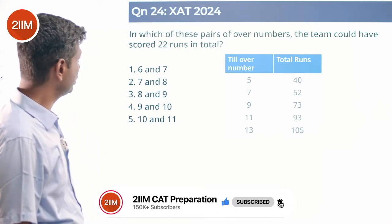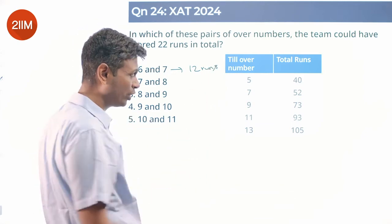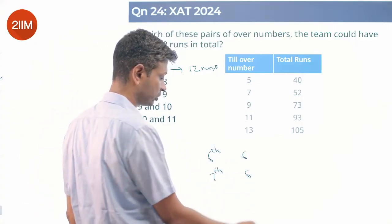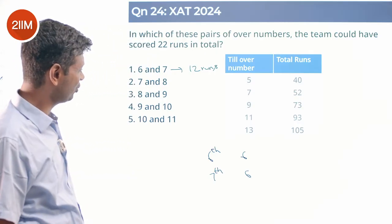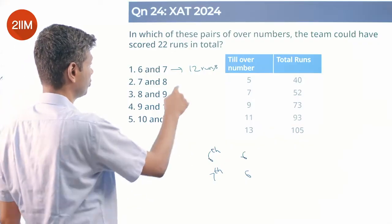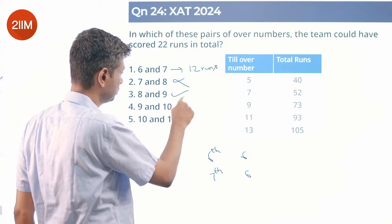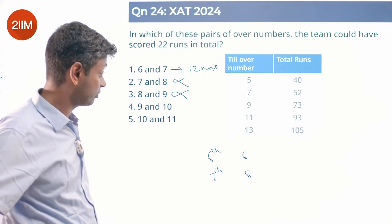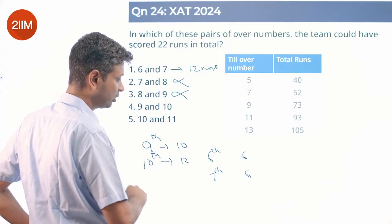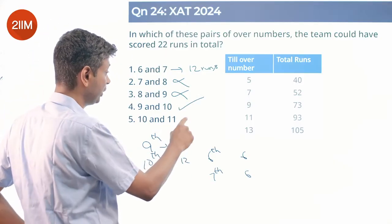Which pair of over numbers could the team have scored 22 runs in total? Overs 6 and 7: from over 5 to 7 only 12 runs were scored, so maximum 6+6=12 — not possible. Overs 7 and 8: at least 6 per over, maximum 6+15=21 — 22 not possible. Overs 8 and 9: from over 7 to 9 exactly 21 runs were scored — not 22. Overs 9 and 10: in over 9 they could score up to 10, in over 10 up to 12, so 9+10=19 to 22 — 22 is possible. Overs 10 and 11: total runs in those two overs would be 20 — not 22. So the answer is overs 9 and 10.